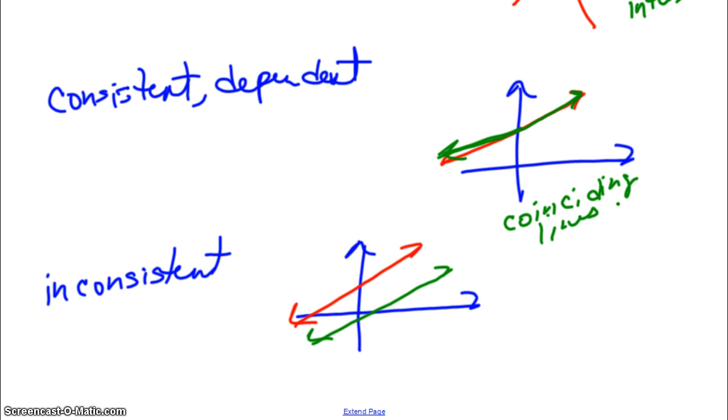Okay, so those are the three kind of graphical situations you're going to get. So, let's do a quick example. Let's classify, quite often you're going to get, the instruction is going to be classify without graphing.